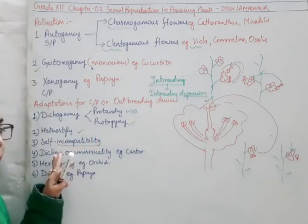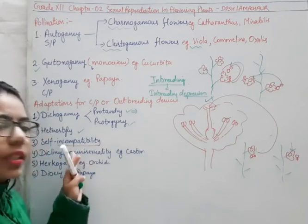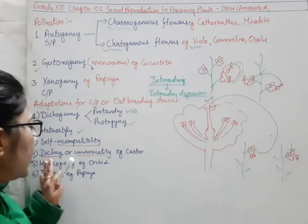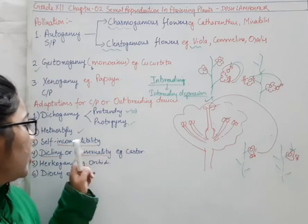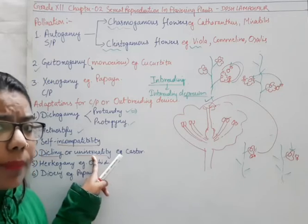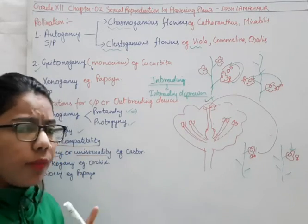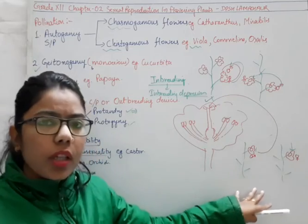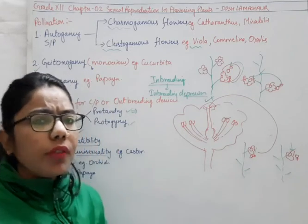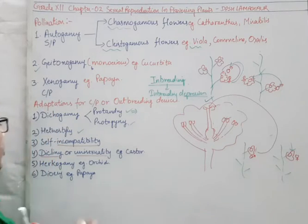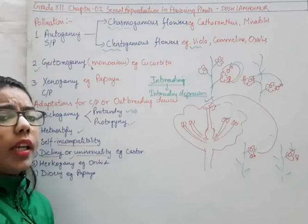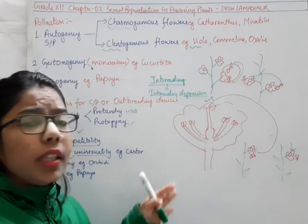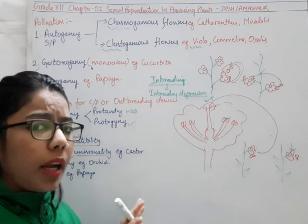Self-incompatibility again ensures cross-pollination and prevents self-pollination. Then comes dicliny or unisexuality: bisexual means both reproductive units are present on the same flower, and unisexuality means both are present on different flowers. In this condition, there will be no self-pollination — it will lead to cross-pollination and prevent self-pollination. This is the method nature follows and plants adapt accordingly.